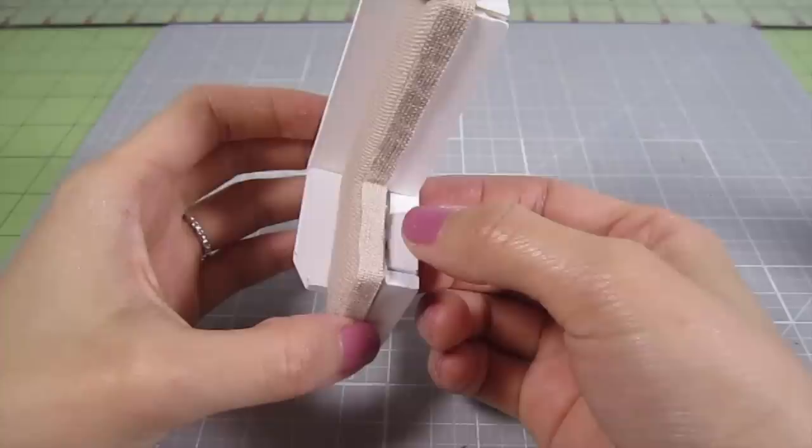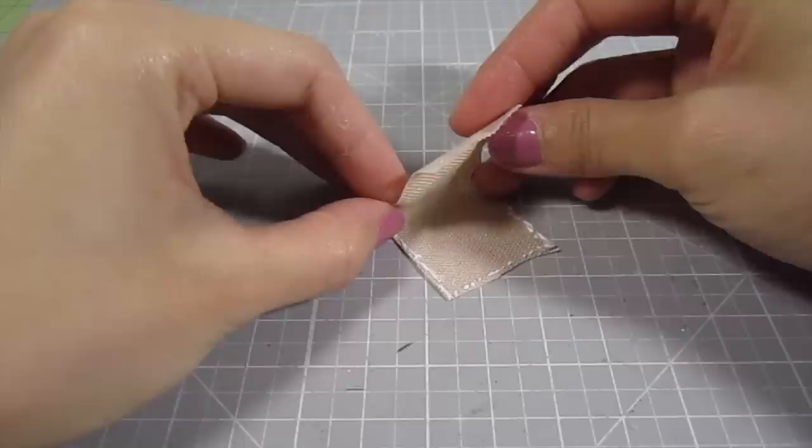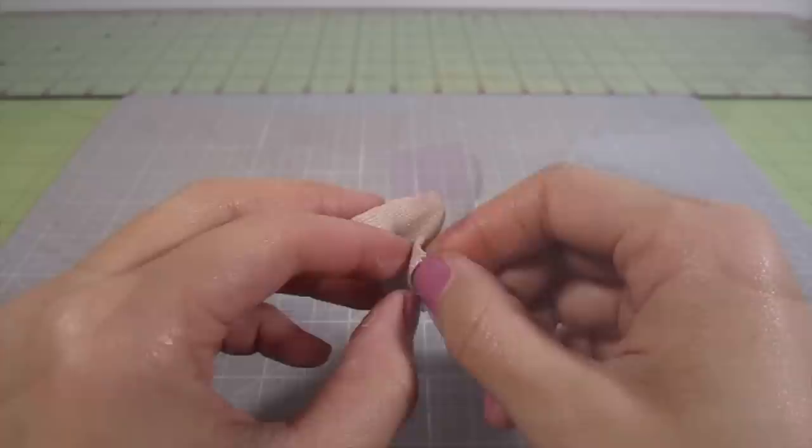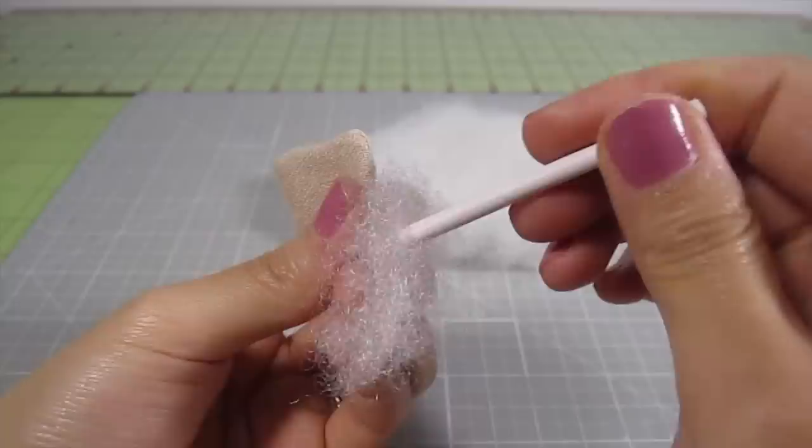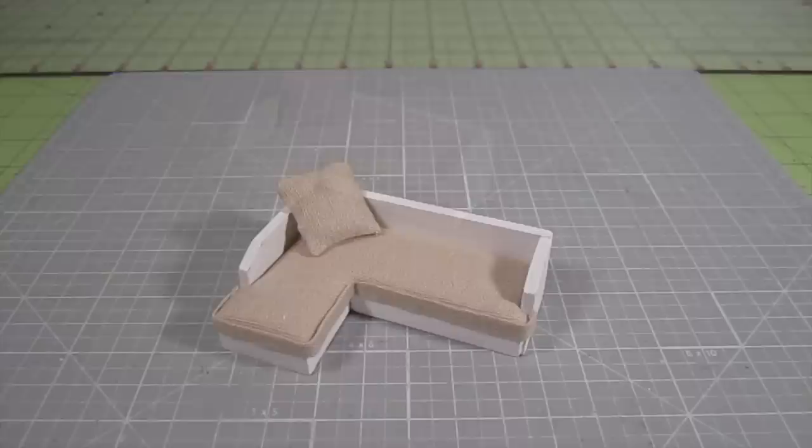Every couch needs a pillow so cut out a 1 inch by 2 inch rectangle of canvas. Add glue around half the edges leaving a small gap on one side. Fold the rectangle in half and add glue around the edges to prevent any fraying. Once that's dry, flip the pillowcase inside out. Take some of that stuffing that comes with the kit and fill the pillowcase. Add more glue and close the opening by folding the edges inward. Add that onto the couch.